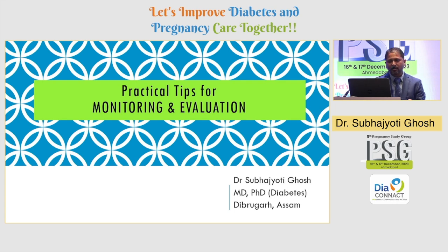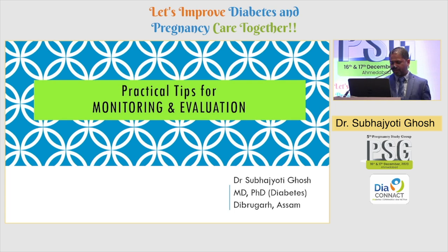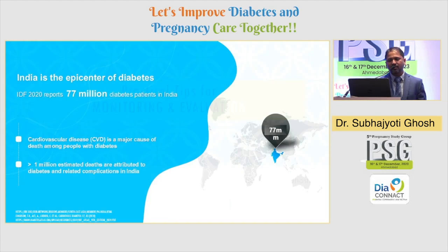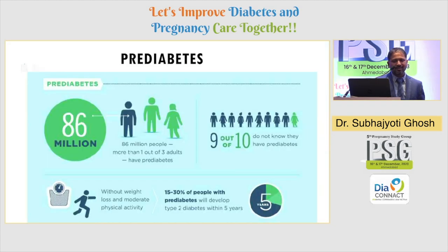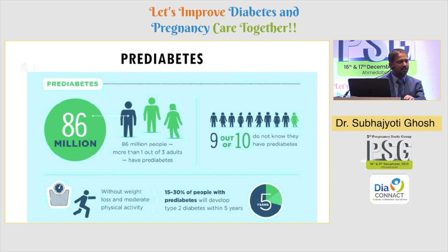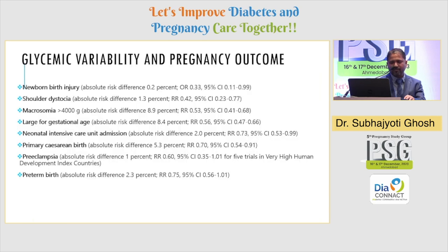The topic seems to be very simple: practical tips for monitoring and evaluations. We all know that India is a diabetic epidemic. The thing which is worsening us is about the status of pre-diabetes — 9 out of 10 have pre-diabetes but don't know it will affect them.